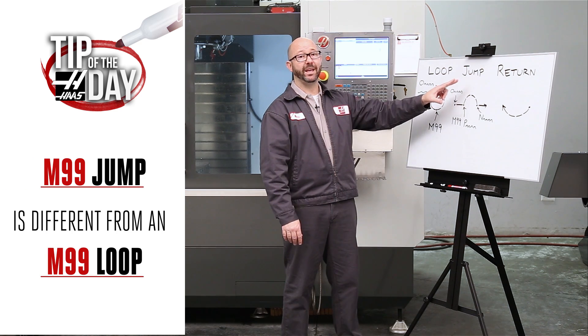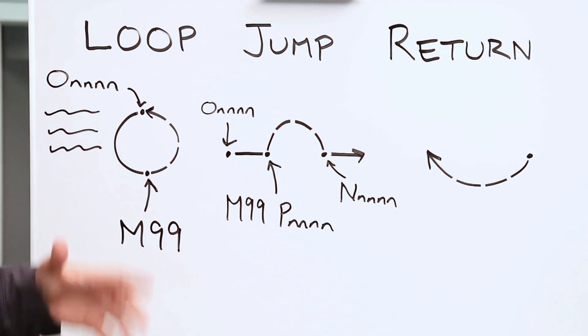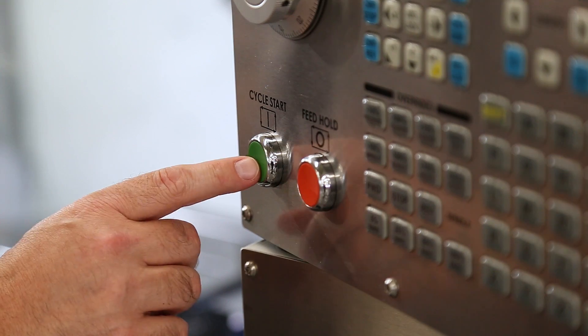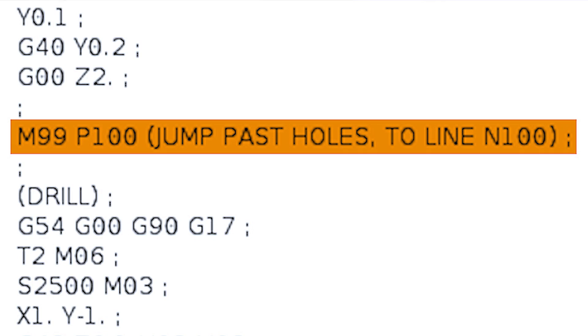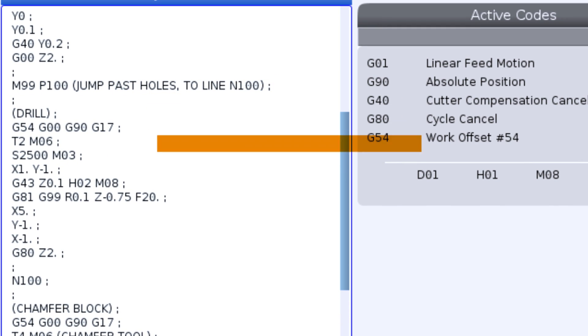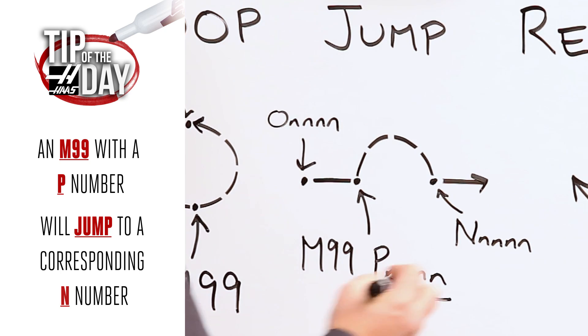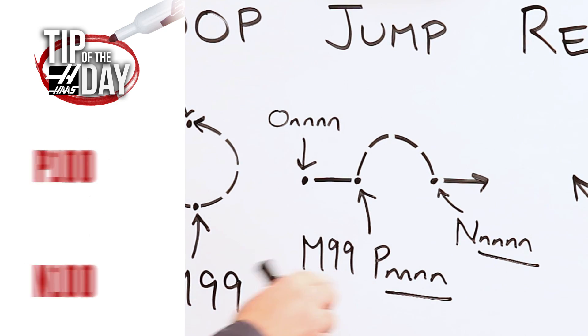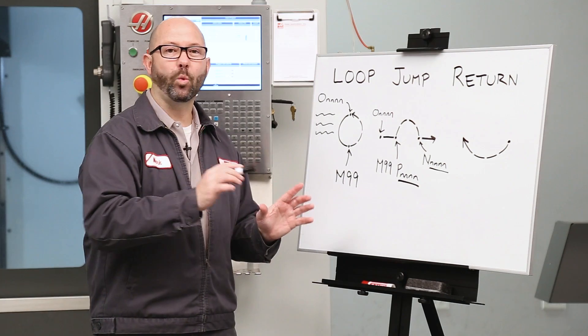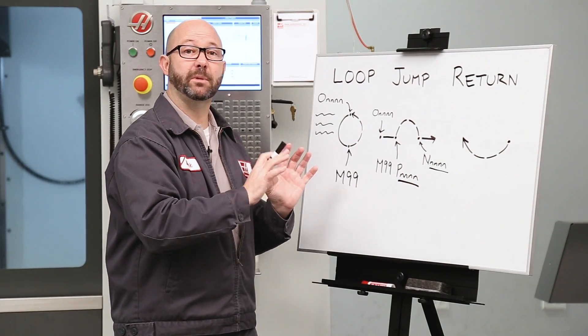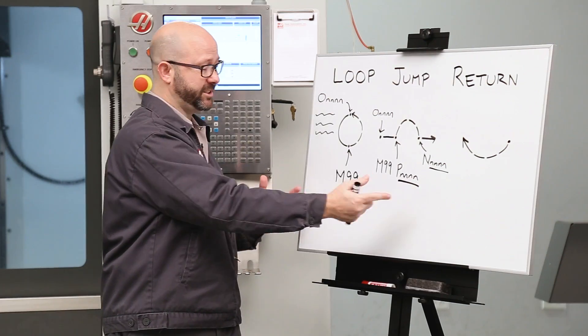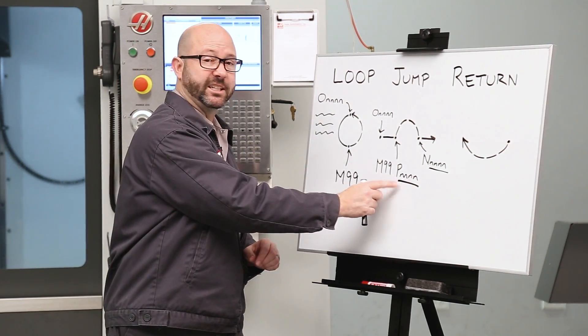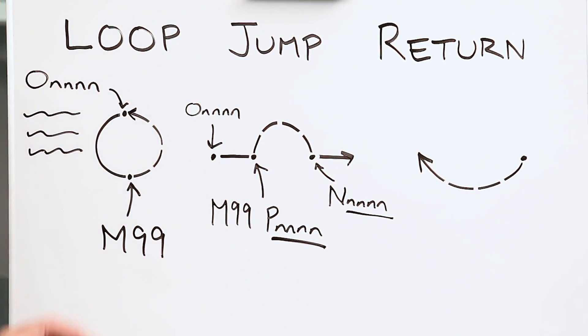Now an M99 jump is very different from an M99 loop. We'll start our program in the same way from our O number, press cycle start. Our code will run until we reach an M99 with a P number. At this point, our program is going to jump. An M99 with a P value will cause us to jump to a line in that same program with an N number that corresponds with our P number. This is a one way jump. It's not coming back unless some other code tells it to. And without that P number on the same line as the M99, it's just a loop. It's that P value that distinguishes an M99 jump from an M99 loop.